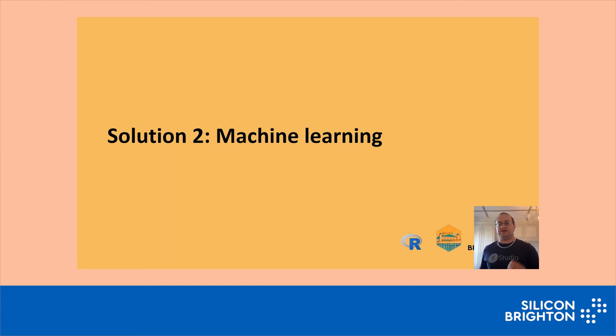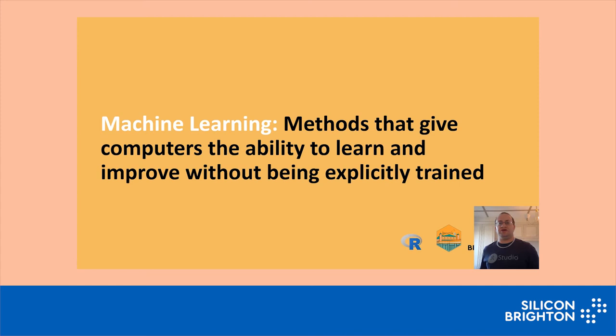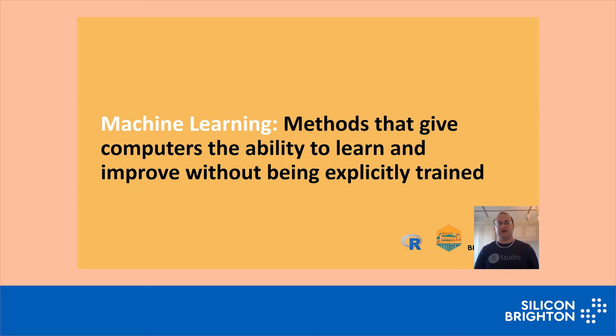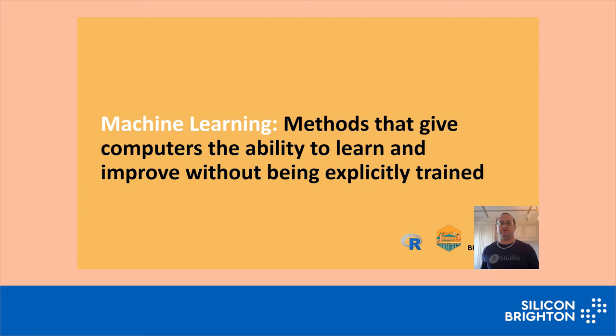Some of you tuning in today might not be as familiar with machine learning methods, so I just wanted to start with a quick definition I've used for a number of years, focusing on the ability for computers to learn without explicitly training them. Machine learning is where you feed a computer some data — some information on something you've seen in the past — and you don't tell the machine to predict anything. You just say: here's the data, analyse it, find the patterns in it, so that I can at some point in the future give you new data and have it make predictions and projections.